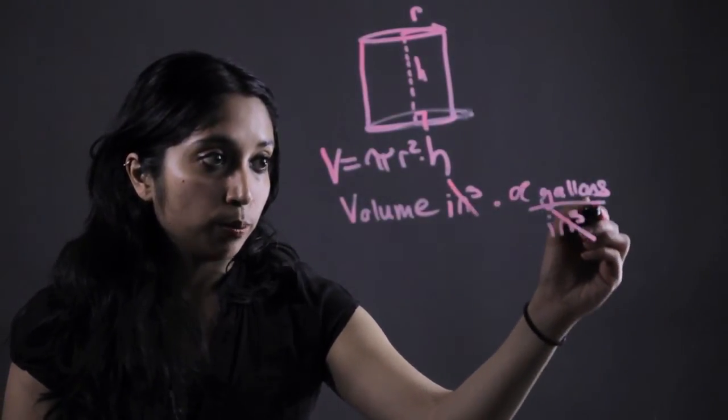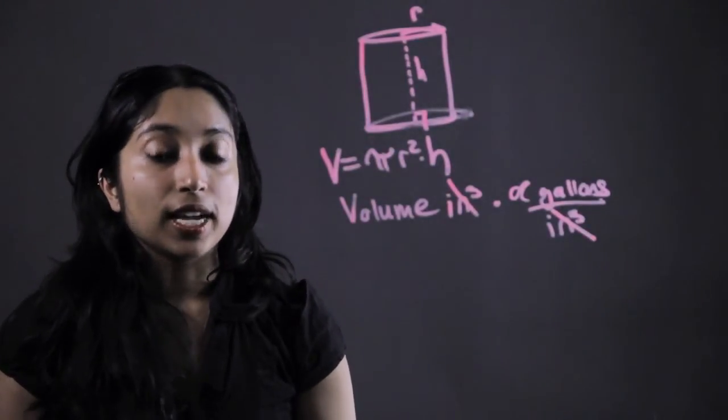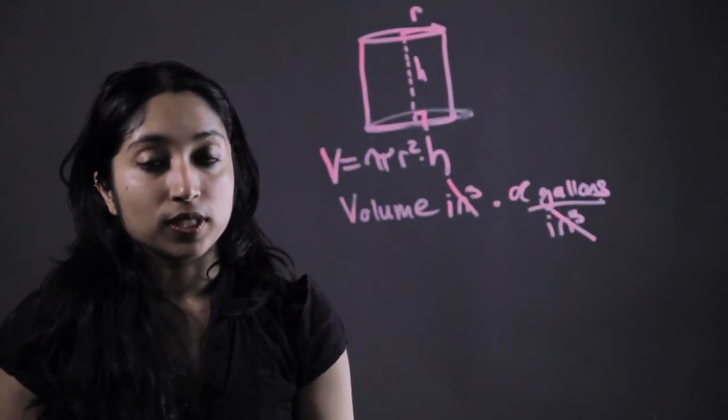Multiply these, cross out, and boom, we have our volume in gallons. And that's how you find the volume of a cylinder in gallons.